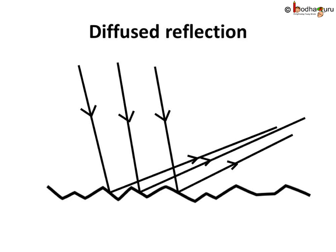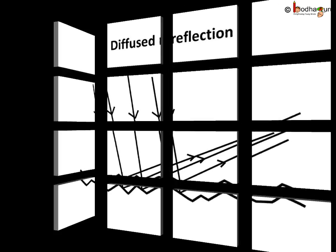When all the parallel rays reflected from a plain surface are not parallel, the reflection is known as diffused or irregular reflection. Diffused reflection takes place from rough surfaces.